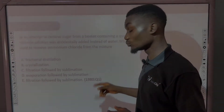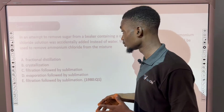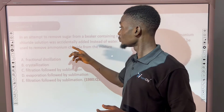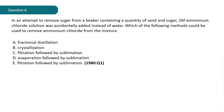Question 6, which is question 1 of the year 1980, says: in an attempt to remove sugar from a beaker containing a quantity of sand and sugar, two molar ammonium chloride solution was accidentally added instead of water. Which of the following methods could be used to remove ammonium chloride from the mixture?